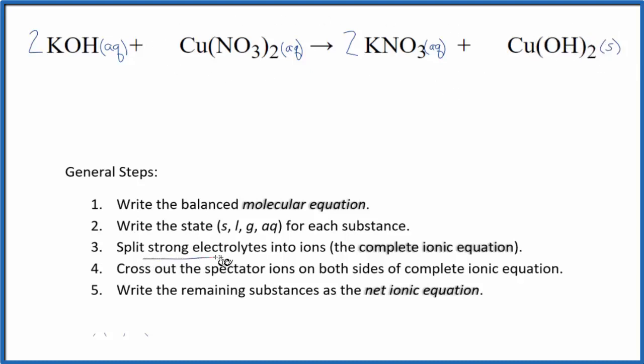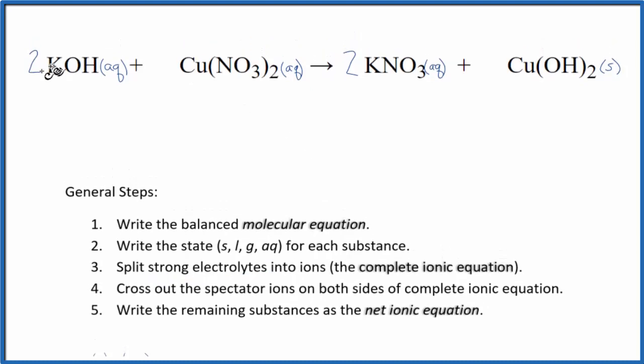Now we can split the strong electrolytes into their ions. So potassium, group 1 on the periodic table, 1 plus ionic charge. Hydroxide, 1 minus. So we'll write K plus. And I won't write aqueous after each one. We'll do that at the end. 2 means I have 2 of these potassium ions.